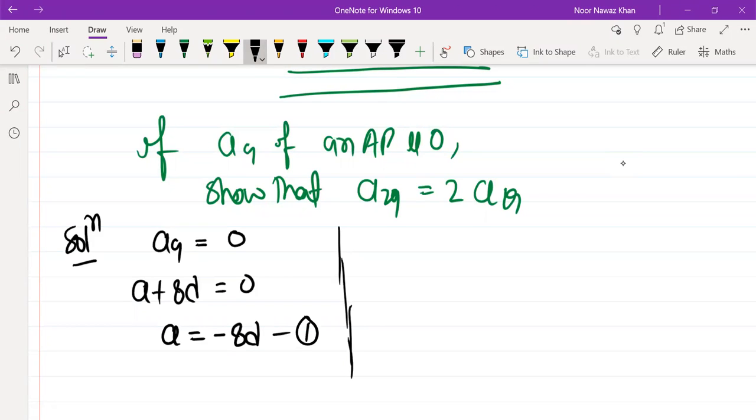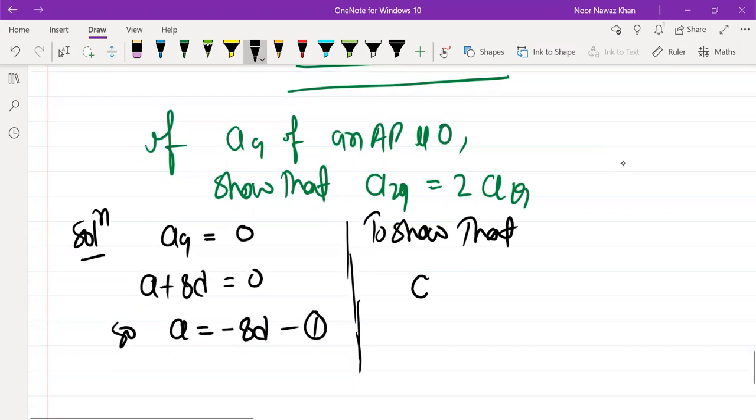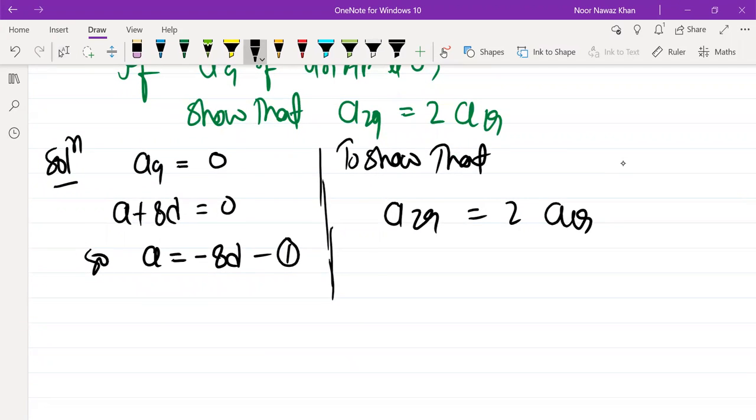We need to show that a₂₉ = 2a₁₉. The 29th term is a + 28d, and the 19th term is a + 18d. Now substitute the value of a.